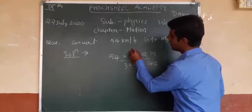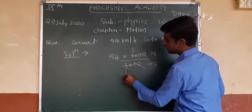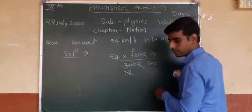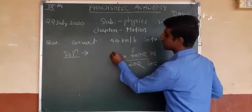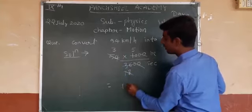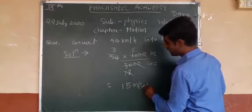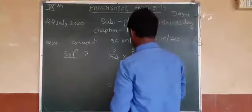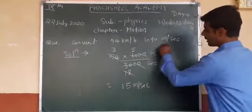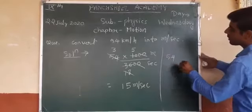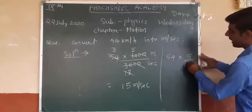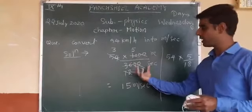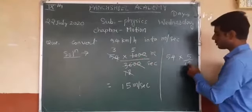This simplifies — cancel the two zeros, two fives make ten, and 3600 is reduced to 1800, then to 18. So you can directly convert by multiplying the value by 5/18. That shortcut 5/18 comes from this calculation, so no need to always write 1000 and 3600 — just remember 5/18. Cut the 18 here.